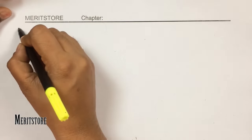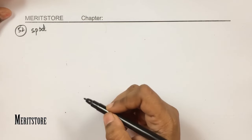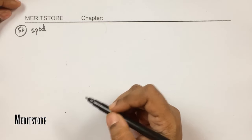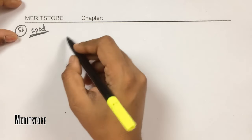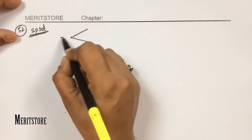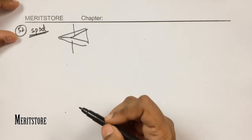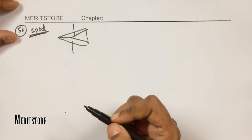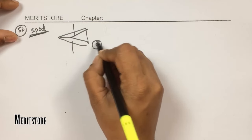Question number 52: SP³D hybridization results in 5 orbitals. In this arrangement, three orbitals are in one plane, one is above the plane, and one is below the plane. The geometry is therefore trigonal bipyramidal. Hence option C.